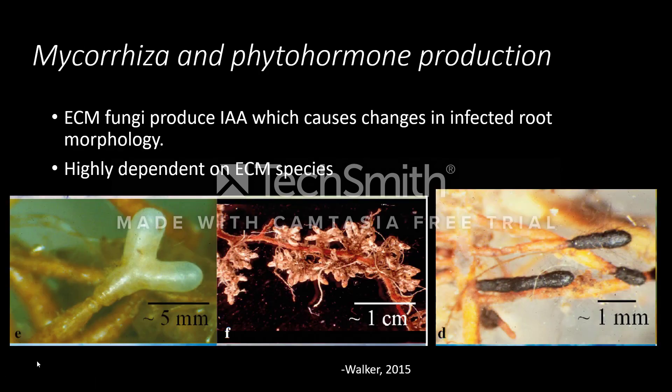Mycorrhizals are also known to produce phytohormones or trigger their production in plants. ECM fungi can produce their own IAA to cause changes in infected root tissue. The pictures below show several roots infected by ECM fungi. Generally, infected roots are shorter and highly branched — a process called dichotomous branching. The root morphology changes are highly dependent on the ECM species.